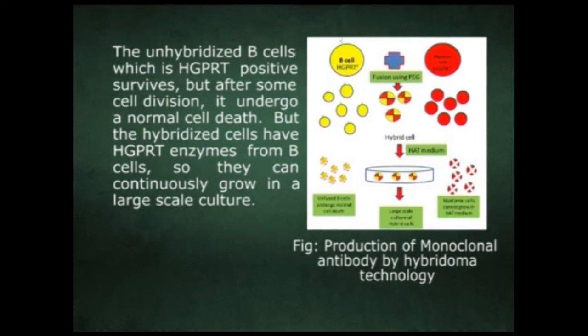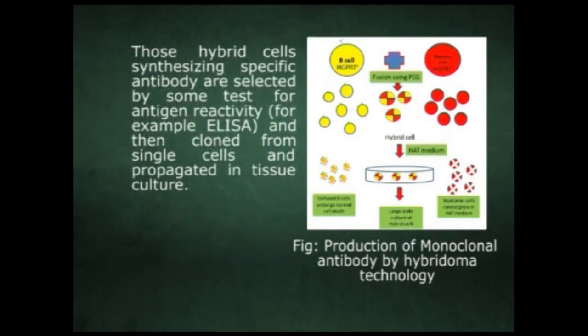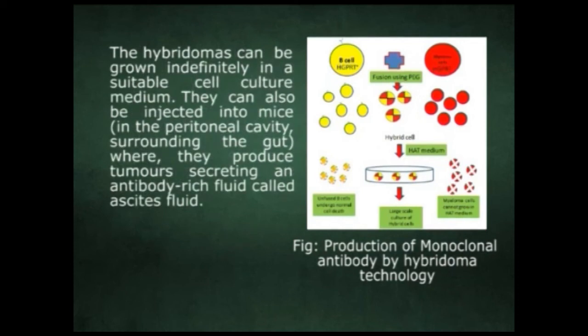Hybridized cells can continuously grow in large-scale culture. Those hybrid cells synthesizing specific antibody are selected by tests for antigen reactivity, for example ELISA, and then cloned from single cells and propagated in tissue culture. The hybridoma can be grown indefinitely in a suitable cell culture medium. They can also be injected into mice in the peritoneal cavity, where they produce tumors secreting antibody-rich fluid called ascites fluid.